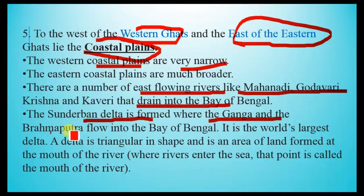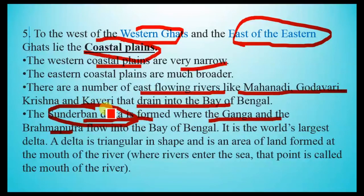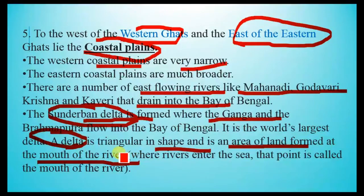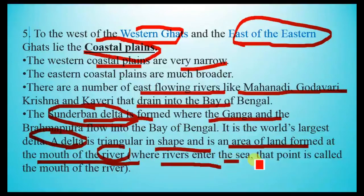The Sundarbans Delta is formed where the Ganga and the Brahmaputra flow into the Bay of Bengal, and it is the world's largest delta. A delta is triangular in shape and is an area of land formed at the mouth of a river — the point where the river enters the sea.